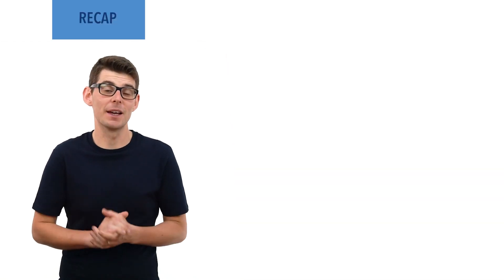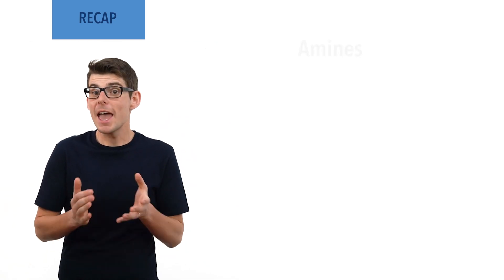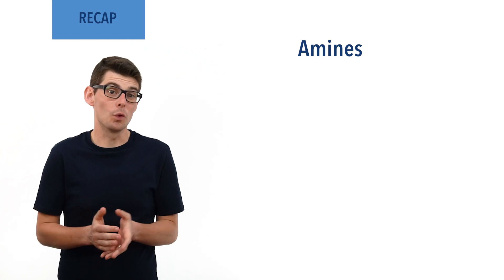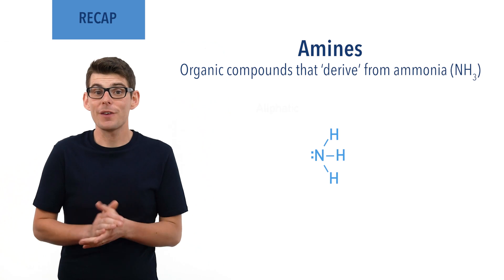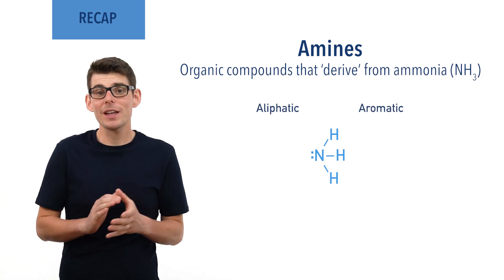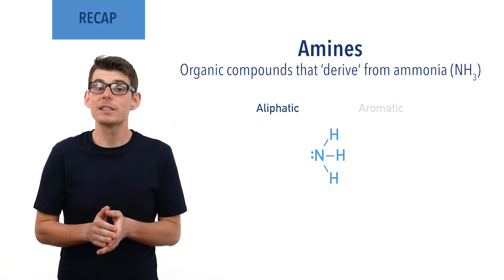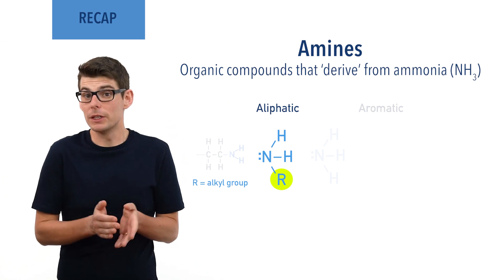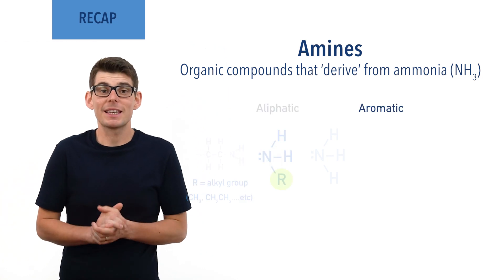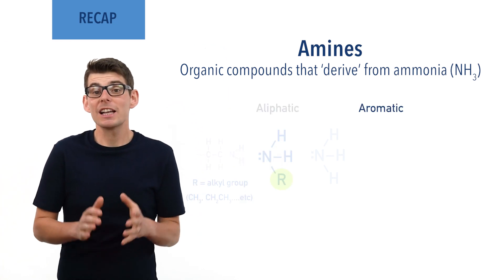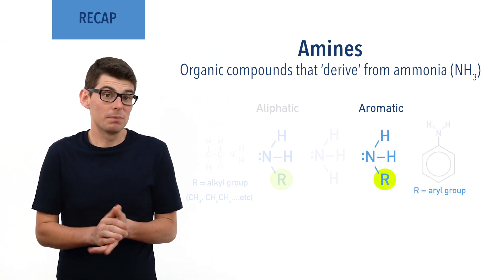Before we talk in detail about the reactions, it is essential you are comfortable with what amines are. Amines are a group of organic compounds that derive from ammonia, NH3. Amines can be aliphatic or aromatic. In aliphatic amines, one or more of the hydrogen atoms in ammonia has been replaced with an alkyl group — a straight or branched carbon chain, such as methyl or ethyl. In aromatic amines, one of the hydrogen atoms in ammonia has been replaced with an aryl group, an aromatic ring group such as phenyl.